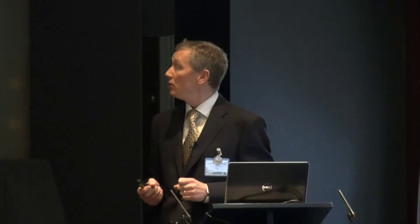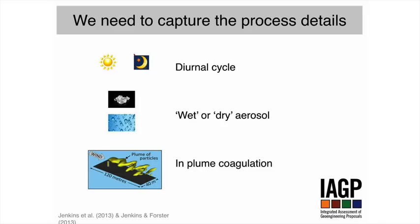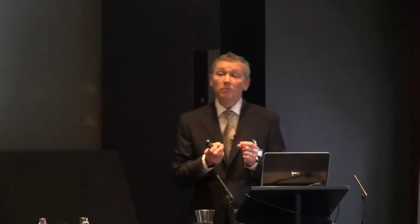Very quickly, because Piers covered it quite well this morning — in terms of looking at global models, we decided to look at marine cloud brightening, and we looked at three different aspects of the technology not so well captured within global climate models: how the effectiveness of the approach varies through the diurnal cycle, the behaviour of the aerosols within a plume, and the nature of the aerosol. Typically it's modelled as a dry sea salt crystal, but what happens when you introduce water into that crystal, which is likely in a real-world situation? For all three of these, we found that the effectiveness from much more detailed modelling — using much smaller grid cell sizes and much smaller time steps — was less than in a global climate model.